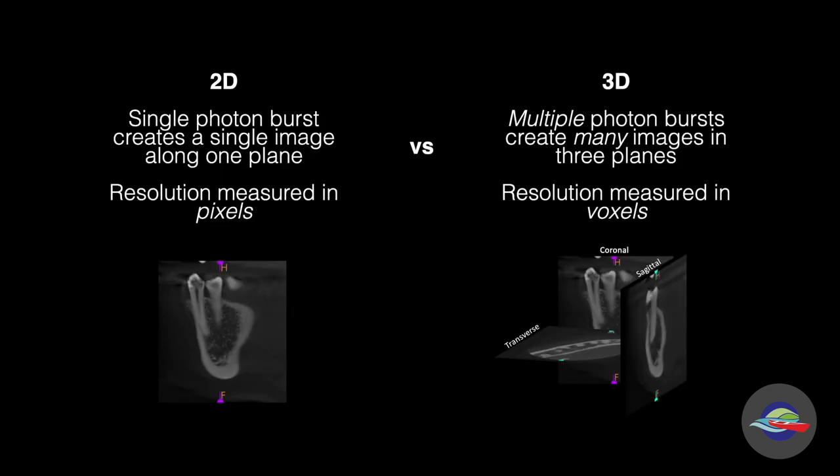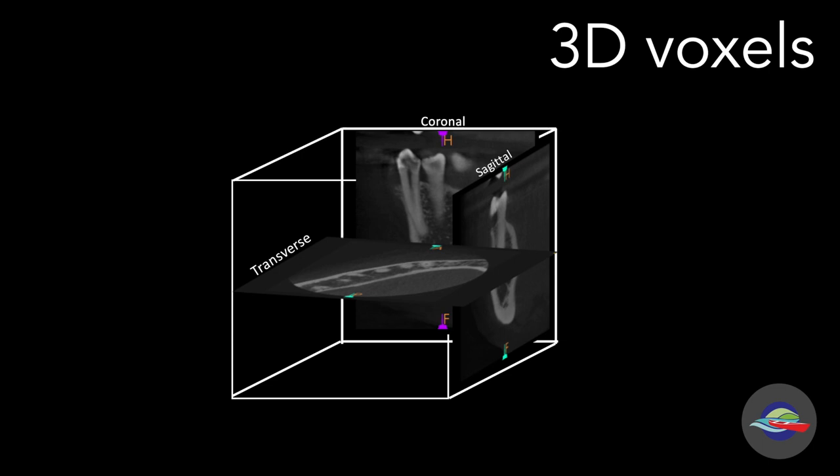To review the difference: a 3D image is really the culmination of many, many 2D images reconstructed together. And the resolution of these 3D images is measured in voxels. Now all CBCTs are different, but the resolution of the CBCT that we use at our practice can be either 75 or 150 microns.